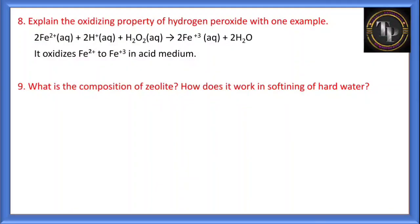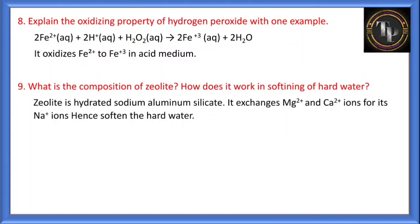What is the composition of zeolite and how does it work in softening hard water? Zeolite is hydrated sodium aluminium silicate. It exchanges Mg2+ and Ca2+ ions for its sodium ions, hence softening the hard water. Zeolite replaces the magnesium and calcium salts present in the water with sodium ions, making the water soft.